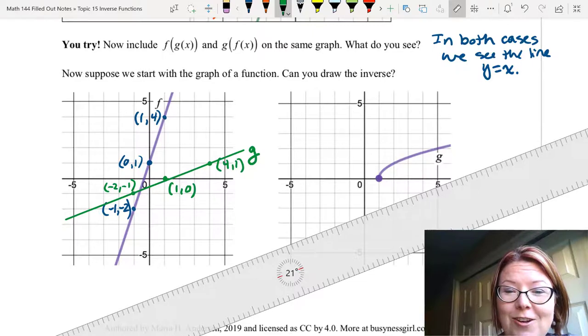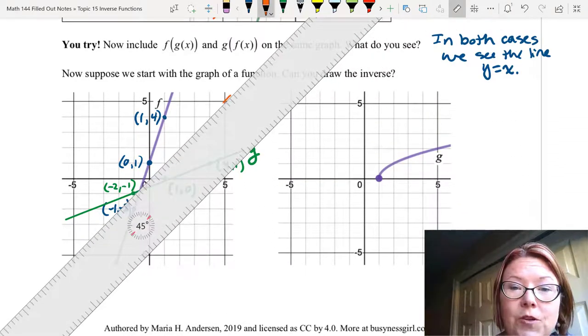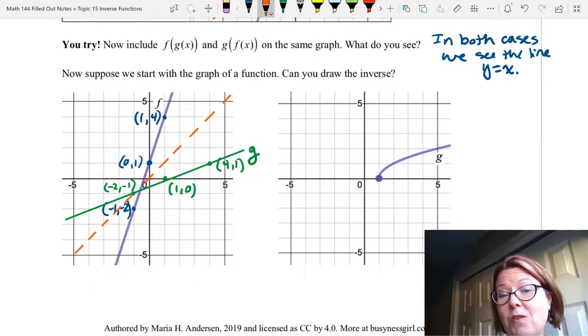And to double check that these are in fact inverses, let's also draw the line y = x. I'll draw that one as a dashed red line here. And sure enough, those two lines do look like a perfect reflection of each other over that line y = x.